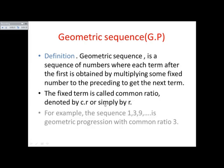For example, the sequence 1, 3, 9, 27 is a geometric progression with common ratio three. Common ratio means next term divided by preceding term: 3 divided by 1 is 3, 9 divided by 3 is 3, 27 divided by 9 is 3. So common ratio equals three. The fixed number we multiply is called the common ratio, or next term divided by preceding term between any two consecutive terms.